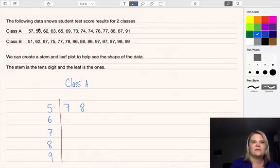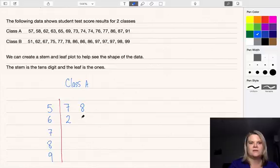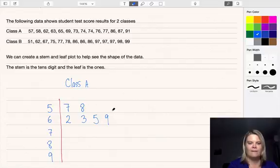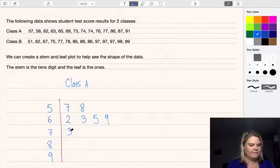So we've got 57, 58, 62 will go here, 63 underneath here, 65, 69, 69, then we go to 73. Next we have two 74s so you need to put them both down.